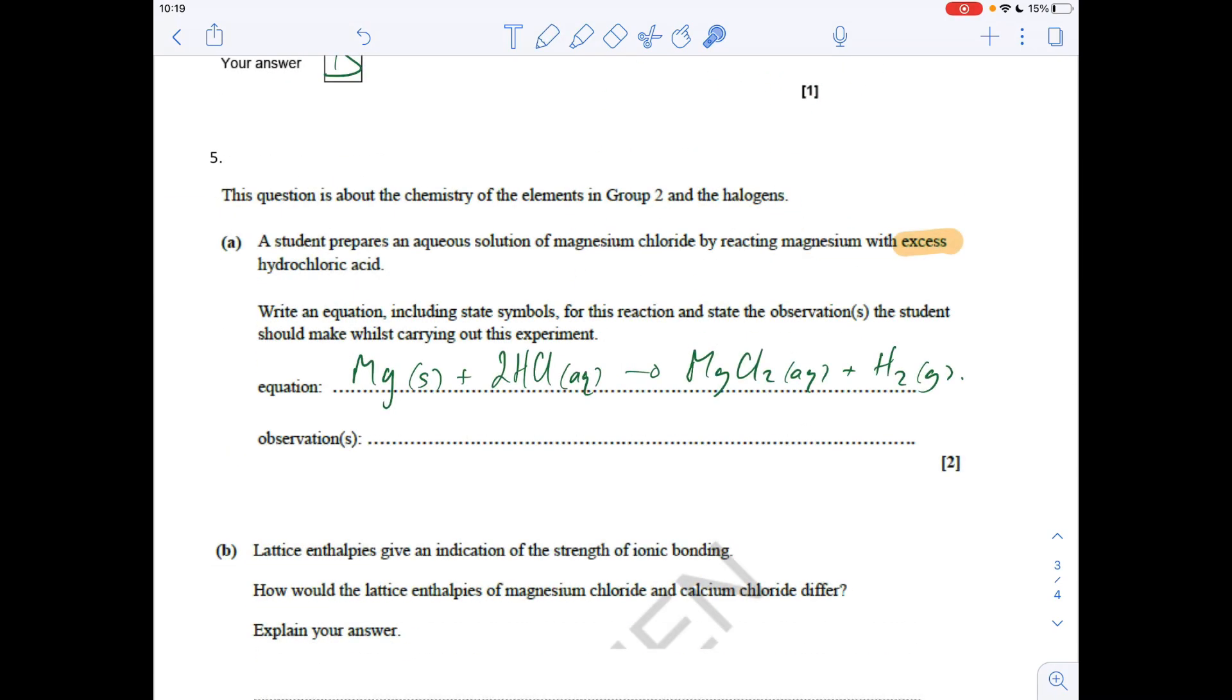Next question. We've got to write an equation including state symbols. So many times students just miss them out, even though it says it in the question. So hopefully you haven't done that. So there's the equation there - it's metal plus acid gives salt and hydrogen. And remember that the acids are always aqueous, as are the salts.